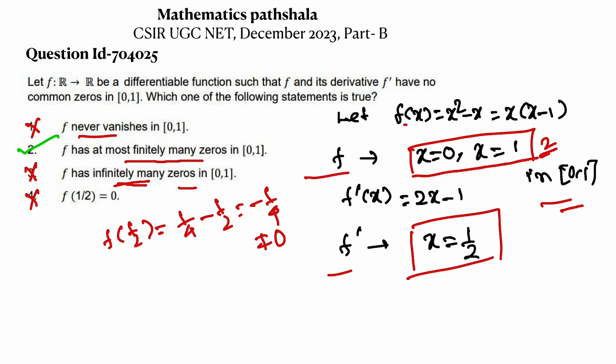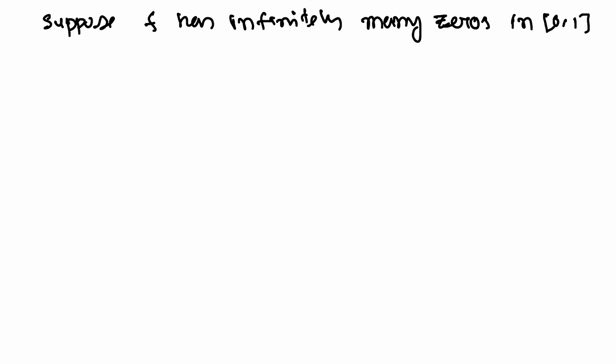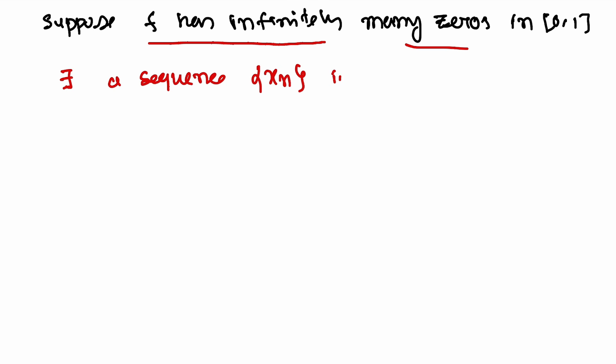We let f: R→R be a differentiable function and f and f' have no common zeros in the closed interval [0,1]. We will prove option 2 by contradiction. So we suppose f has infinitely many zeros in the closed interval [0,1].